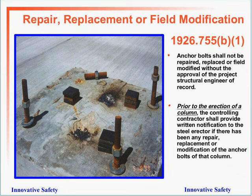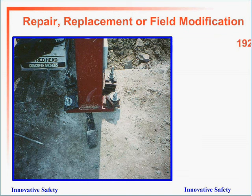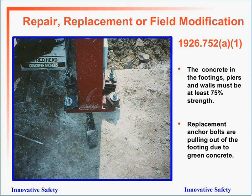Prior to the erection of a column, the controlling contractor shall provide written notification to the steel erector if there has been any repair, replacement, or modification of the anchor bolts of that column — because anchor bolts are put in when the concrete is poured, before the steel erector is even on site. The concrete in the footing, piers, and walls must be at least 75% cured. Green concrete — meaning under 75% cured — can result in movement or anchor bolts pulling out of the footing.